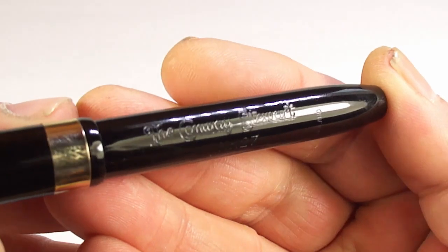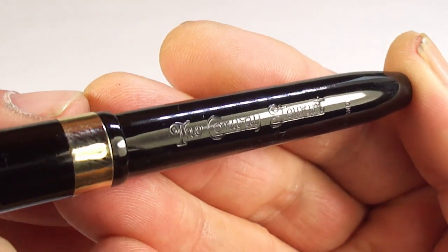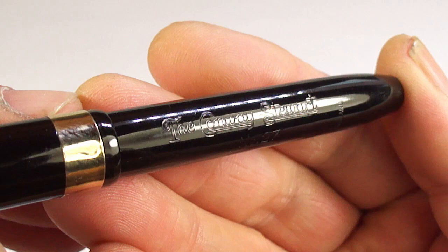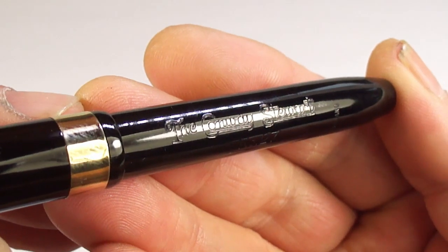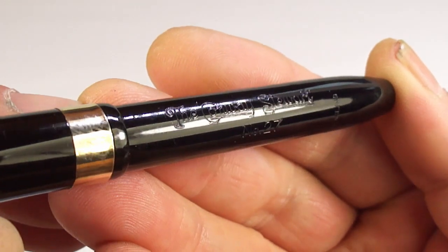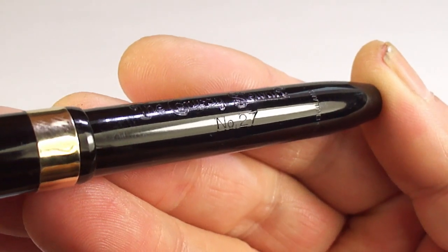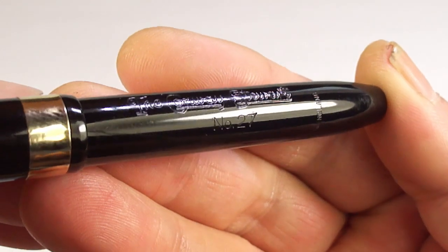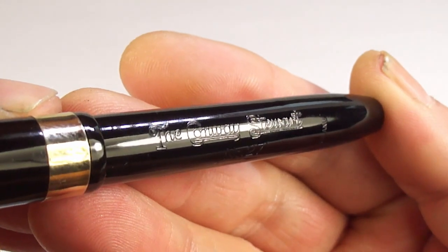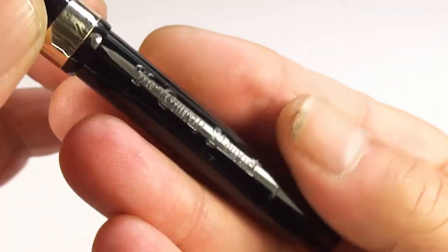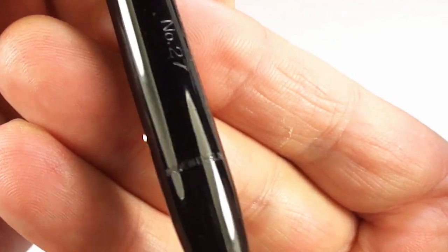As we've just mentioned with regards to the barrel imprint, take a look at that - a lovely clear barrel imprint. The pen is in absolutely gorgeous condition. In this particular instance you can see it quite clearly says Conway Stewart, and then underneath you can see it has number 27.